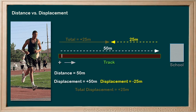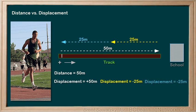Now what if he didn't stop there, but he continued on back to the starting point for his next drill? In this case, the total distance is 100 meters: 50 meters out, 25 back, and another 25 back. Nice and simple.